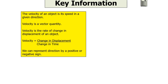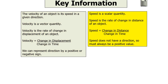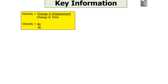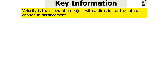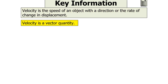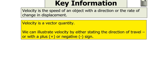The velocity of an object is its speed in a given direction. Velocity is a vector quantity and it's the rate of change in displacement of an object — that is, the change in displacement over the change in time. We can represent direction with a positive or negative sign. By contrast, speed is a scalar — the rate of change in distance — and must always be positive. The equation for average velocity is delta S over delta T.